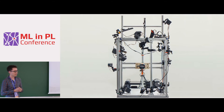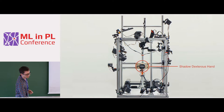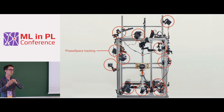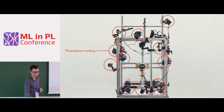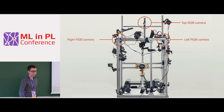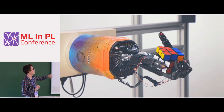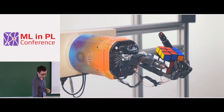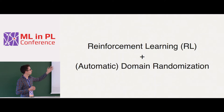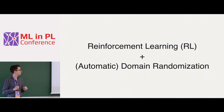Here you can see our complete robotic setup. The Shadow hand is mounted in the center and surrounded by a 3D phase-based tracking system, used to track the fingertips and optionally the object being manipulated. We also have three RGB cameras for vision-based operation. In the close-up, the red markers on the fingertips are LED markers used by the tracking system. Our approach is composed of two core ideas: reinforcement learning and automatic domain randomization.